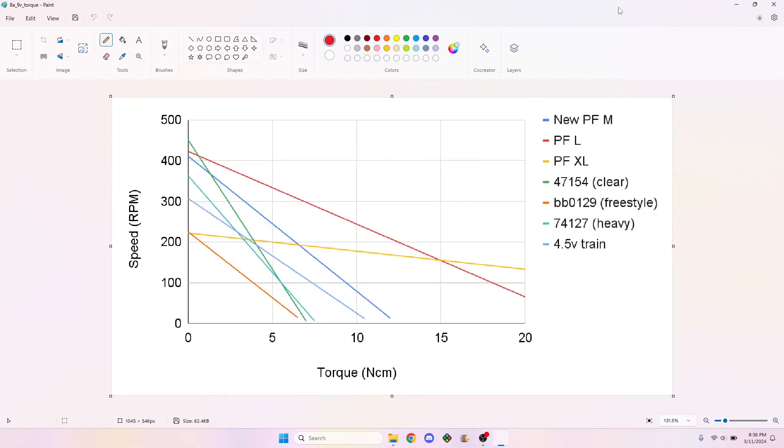These older motors deliver much less torque and power than any of the PF motors, with the freestyle motor being particularly weak.